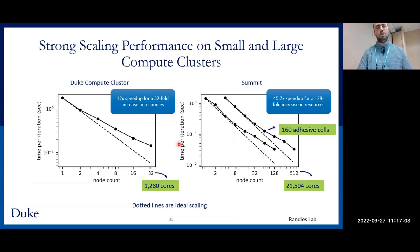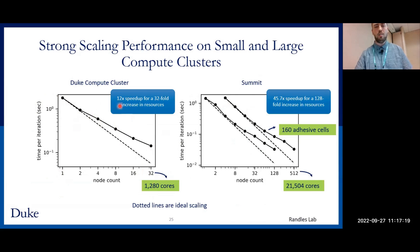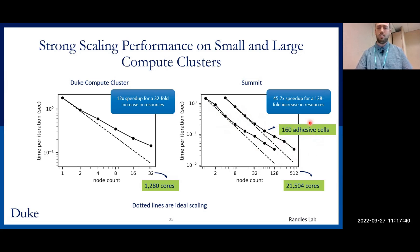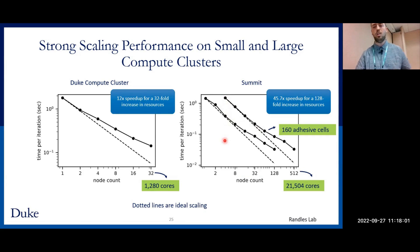Here we have strong scaling performance on both the Duke Compute Cluster and Summit at node granularity. On the DCC, going from one to 32 nodes — about 1,200 cores — we achieved about a 12 times speedup for a 32-fold increase in resources. On Summit, there are two lines: one representing about 40 adhesive cells and another with about 160 adhesive cells. To put that into context, the previous state of the art simulated around 10 cells, so this was an order of magnitude increase. We achieved about a 45 times speedup for a 128-fold increase in resources. The reason we started at four nodes for the larger case was that we couldn't fit the simulation in memory with fewer nodes.